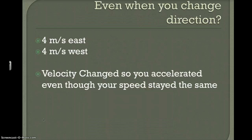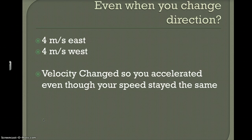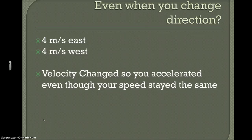This gets a little tricky, so we won't spend too much time on it, but it's important to be exposed to it. Even if you go four meters per second east and then turn around and go four meters per second west — even though your speed is exactly the same — you have accelerated, because you changed velocity by changing direction. Running in a circle means you're constantly accelerating even at constant speed. We're going to focus more on straight lines since changing directions gets too complicated.